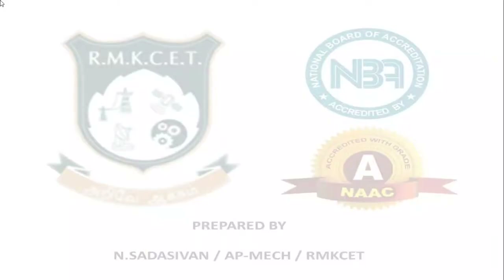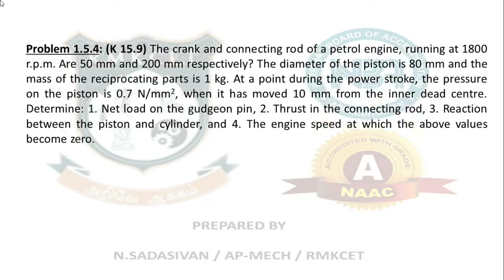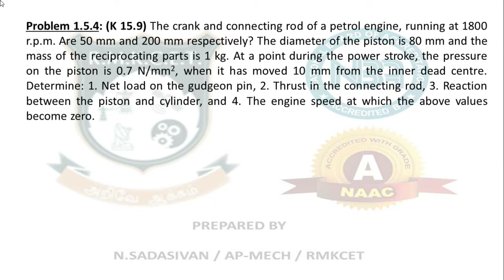The crank and connecting rod of a petrol engine running at 1800 RPM are 50 mm and 200 mm respectively. The diameter of the piston is 80 mm and mass of the reciprocating parts is 1 kg. At a point during the power stroke, the pressure on the piston is 0.7 N per mm² when it has moved 10 mm from the inner dead center. Determine: net load on the gudgeon pin, thrust in the connecting rod, reaction between piston and cylinder, and engine speed at which that reaction becomes zero.